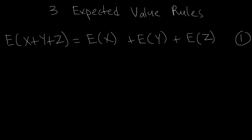The second rule says that if you have a constant B, and you multiply this constant by X — the random variable — then if you multiply a random variable by a constant, you multiply its expected value by the same constant.